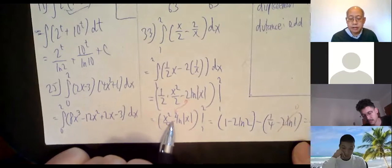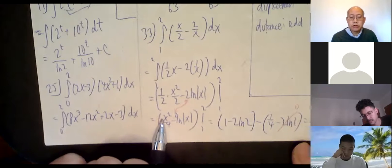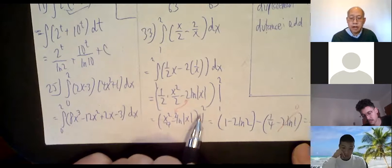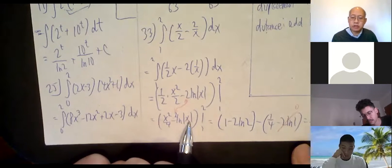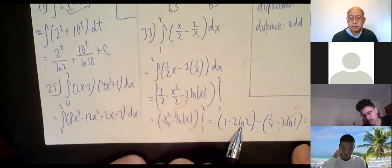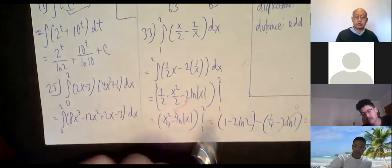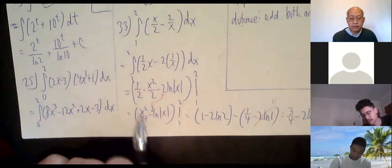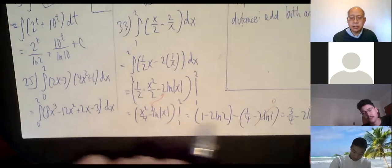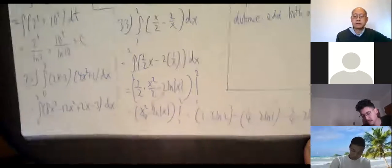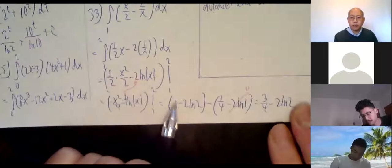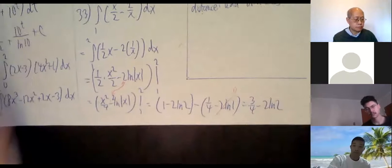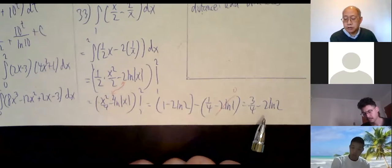That simplifies to x squared over 4 minus 2 ln|x|, evaluated from 1 to 2. Plugging in 2: four over four is 1, minus 2 ln 2. Plugging in 1: one-fourth minus 2 times ln(1), but ln(1) is zero, so that term disappears. We get 1 minus one-fourth, so the final answer is three-fourths minus 2 ln 2.